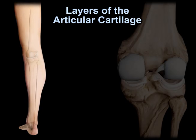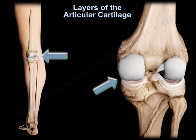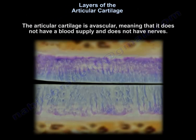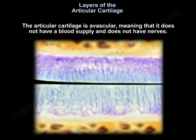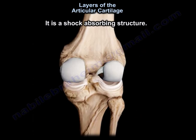Layers of the articular cartilage. The articular cartilage is avascular, meaning it does not have a blood supply, it doesn't have nerves, and it is a shock-absorbing structure.